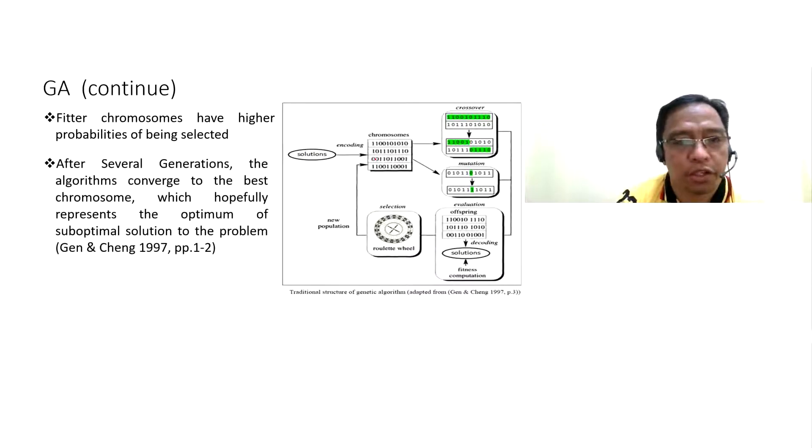After several generations, the algorithm converges to the best chromosome which hopefully represents the optimum or suboptimal solution to the problem according to Gen and Chen, 1997, pages 1 and 2.